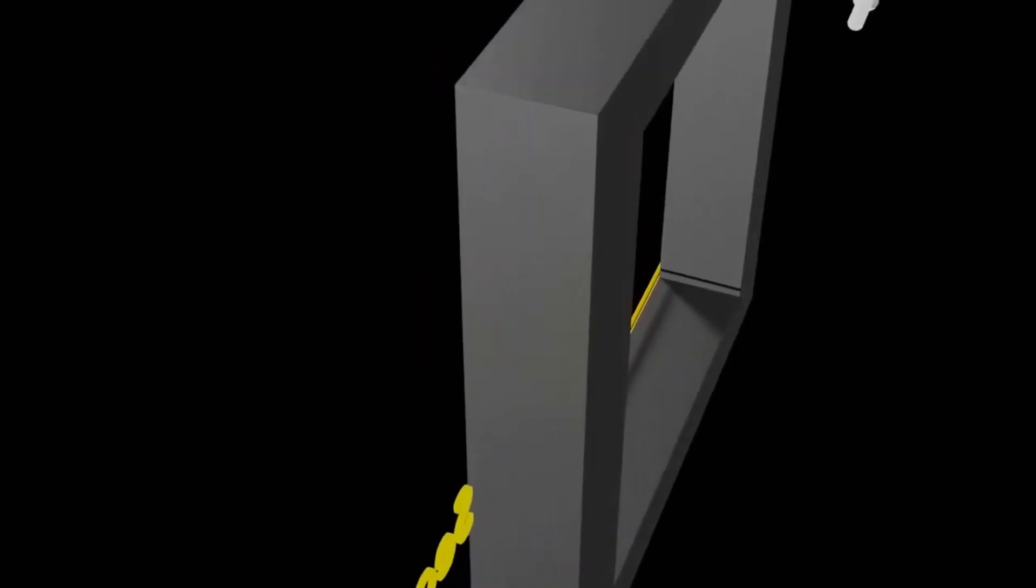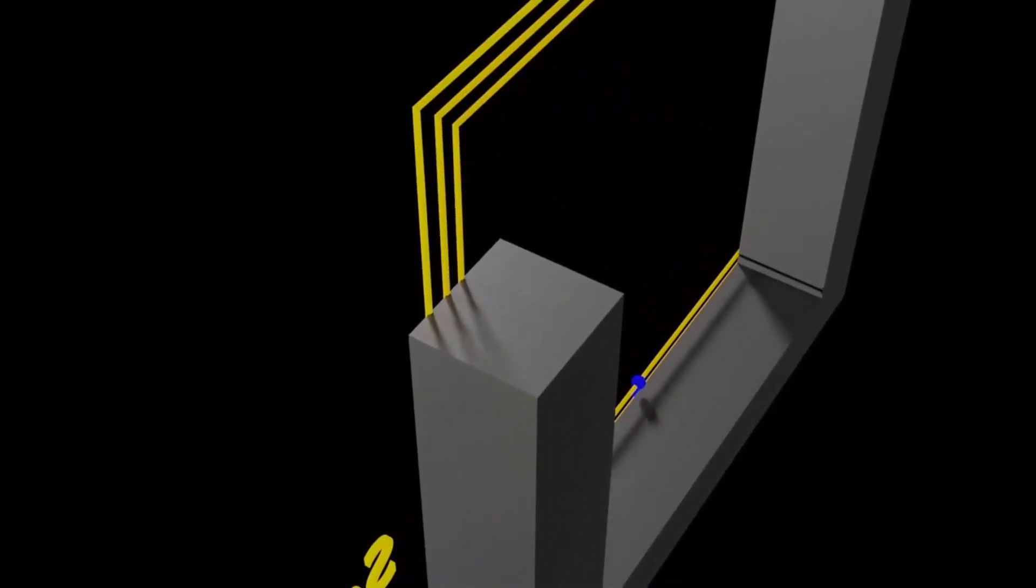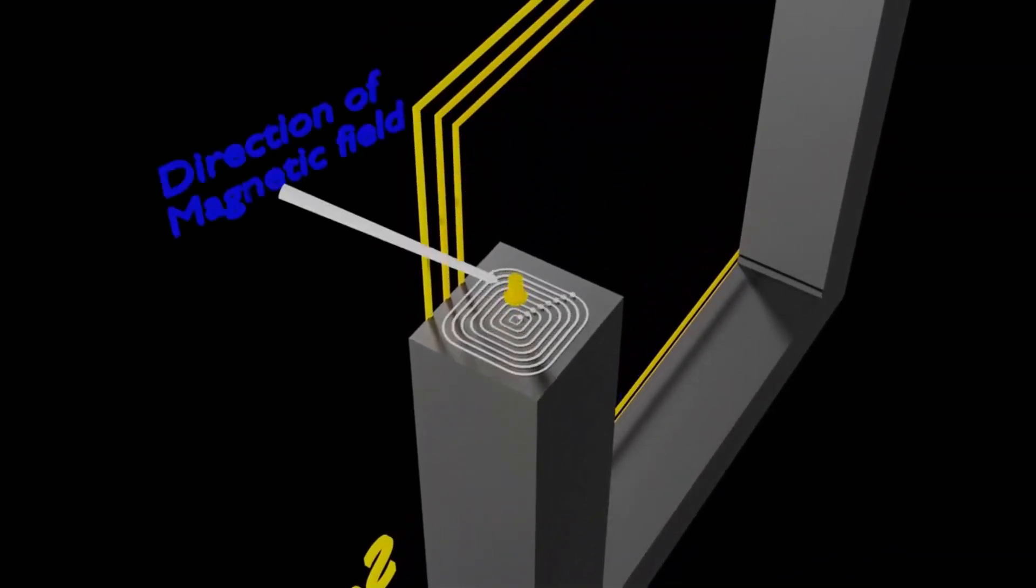In reality, eddy currents are circulating currents induced within the core material of a transformer due to the changing magnetic field. Picture the magnetic field as the pebble, and the transformer's core as the lake. When the pebble drops, or when the magnetic field changes, it creates these ripples or eddy currents.